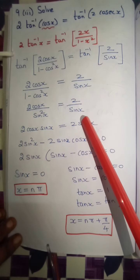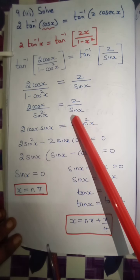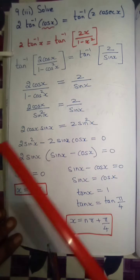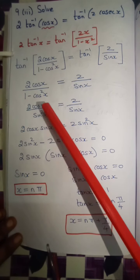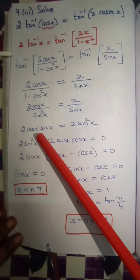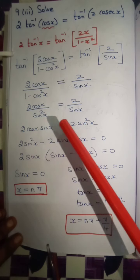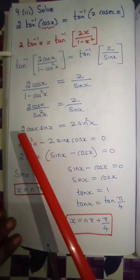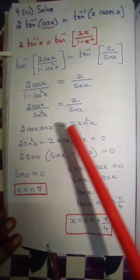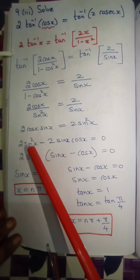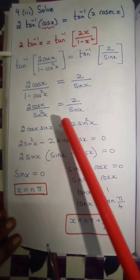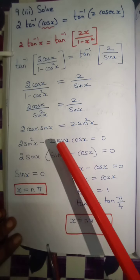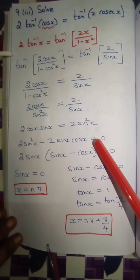This can be written as tan inverse of (2 by sin x) divided by sin x. The tan inverse cancels on both sides, giving: 2 cos x by sin square x equals 2 by sin x. Cross multiplying sin square x, we get: 2 cos x times sin x equals 2 sin square x, which rearranges to 2 sin square x minus 2 sin x cos x equals 0.